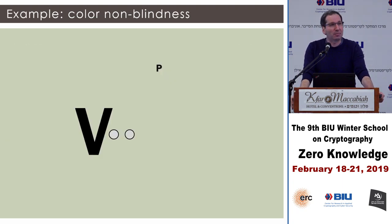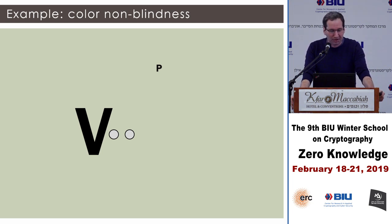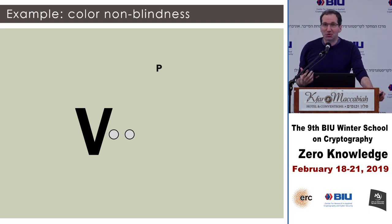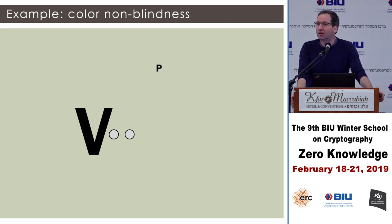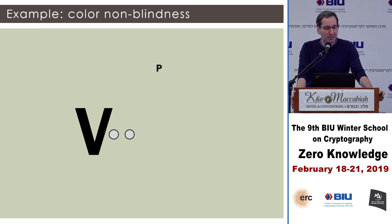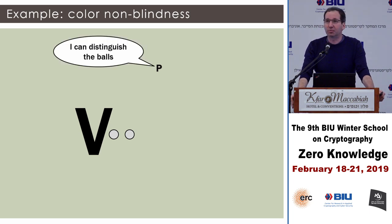Let's start with a popular example. We have the verifier standing close to us, the prover standing far away, and the prover is trying to convince the verifier that he can distinguish two balls — that he's not colorblind. As far as the verifier is concerned, he's seeing two gray balls, and the prover claims he can distinguish them. The protocol proceeds in two rounds — two messages.